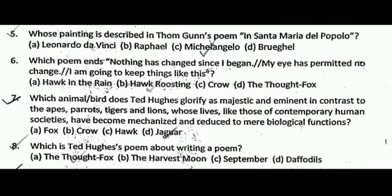Question number five: whose painting is described in Tom Gunn's poem In Santa Maria del Popolo? The correct answer is C, that is Michelangelo.